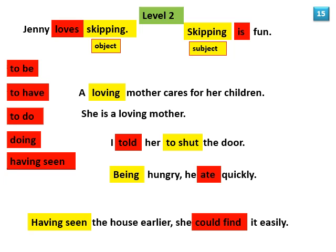We saw how each of the three verbs — be, have, and do — in their different forms can be used either as a main verb or as a helping verb in a sentence. But the main form of each of these verbs — to be, to have, or to do — does not show time, so it can't be used as a verb in a sentence. Similarly, the present participle, for example 'doing,' does not show time. Time is shown by the helping verb.